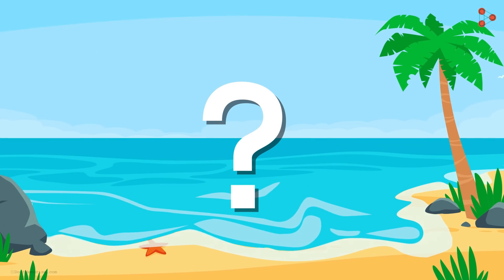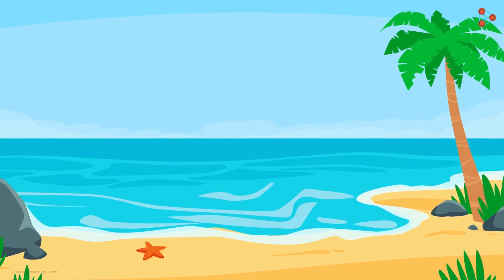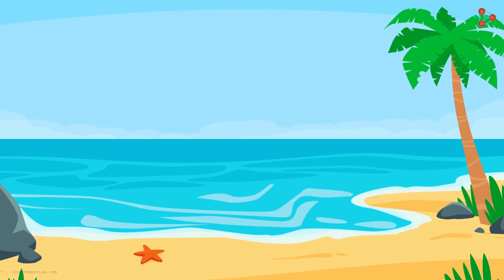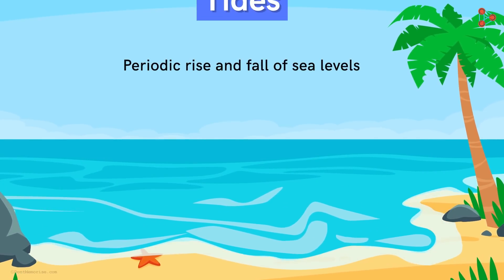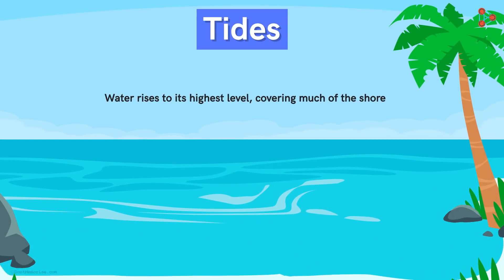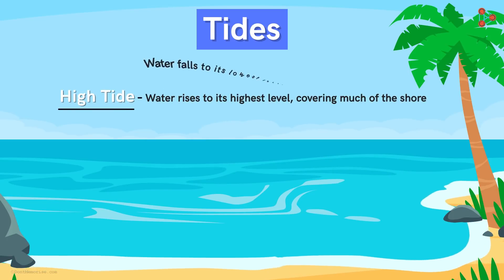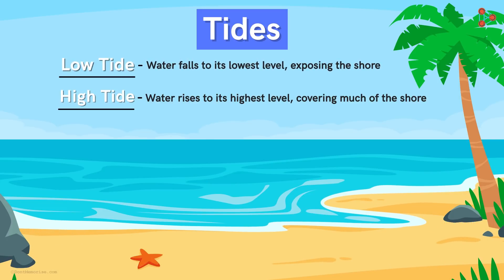Have you ever spent a day at the beach? If yes, then you must have observed the variations in the level of the sea near the shore. This periodic rise and fall of sea levels are called tides. When the water rises to its highest level, covering much of the shore, it is called a high tide. And when the water falls to its lowest level, exposing the shore, it is called low tide. But have you ever wondered what causes these tides? Let's find that out in this Q-box video!